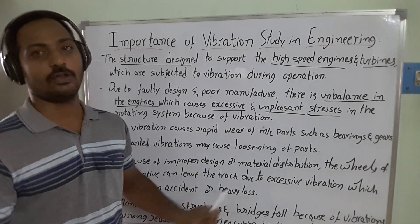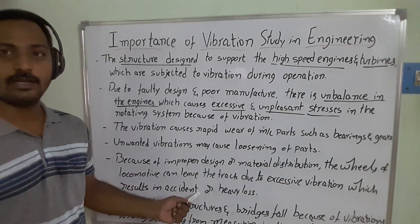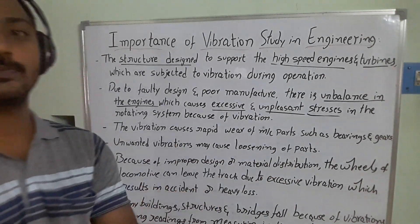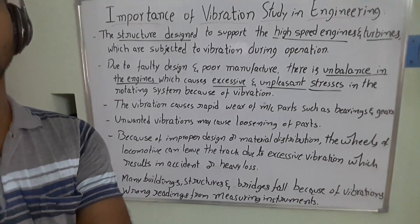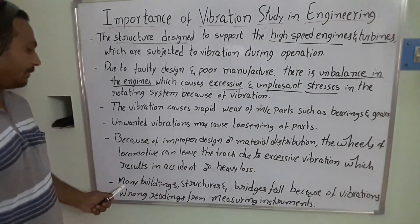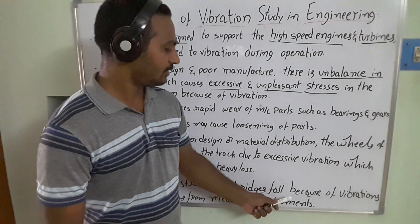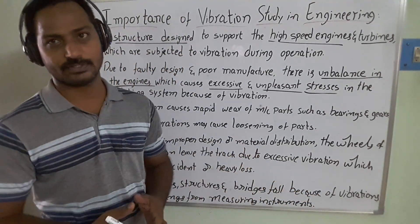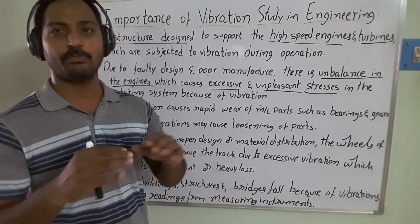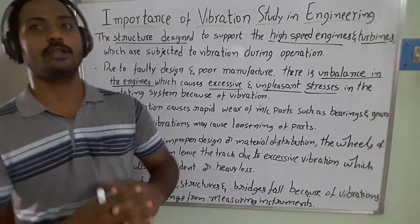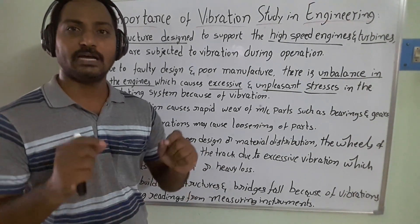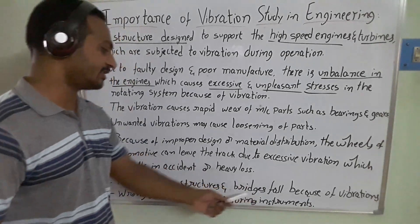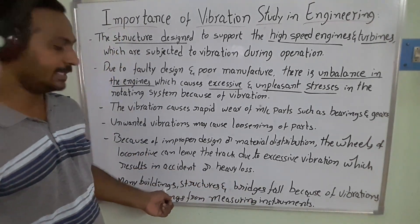Loosening of parts is one important example. Many buildings, structures, and bridges fall because of vibrations. When external excitations and natural excitations match the natural frequency, resonance occurs. At resonance, the vibration frequency is amplified to an infinity level, and automatically the systems are going to fail.